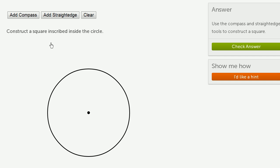Construct a square inscribed inside the circle. In order to do this, we just have to remember that a square, well, we know all squares, all four sides are congruent and they intersect at right angles.